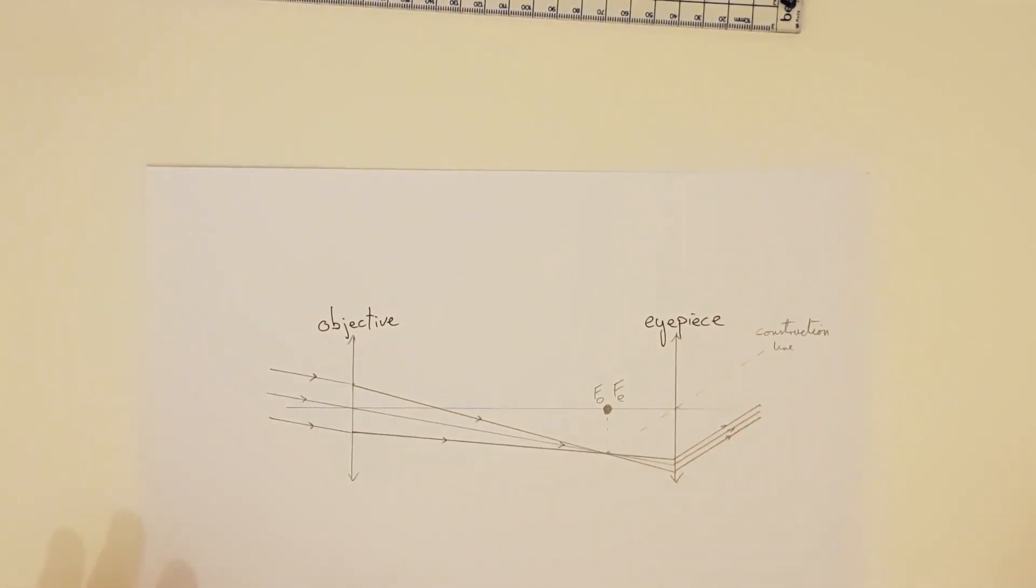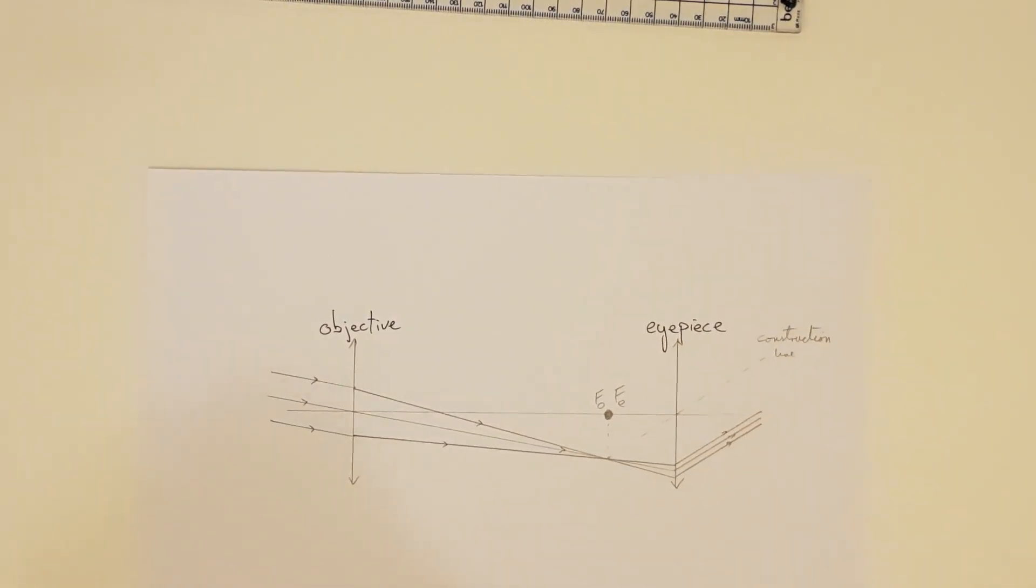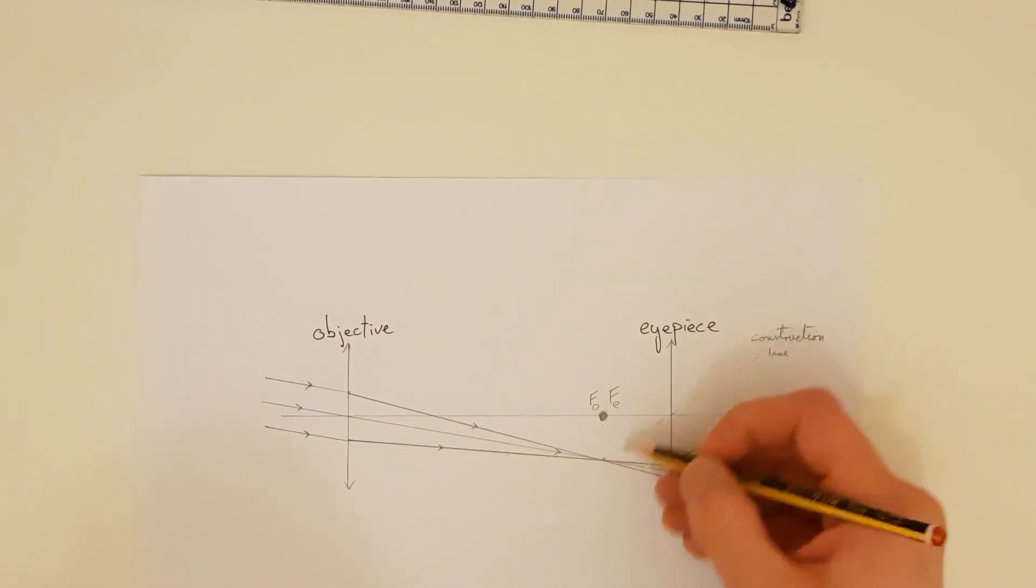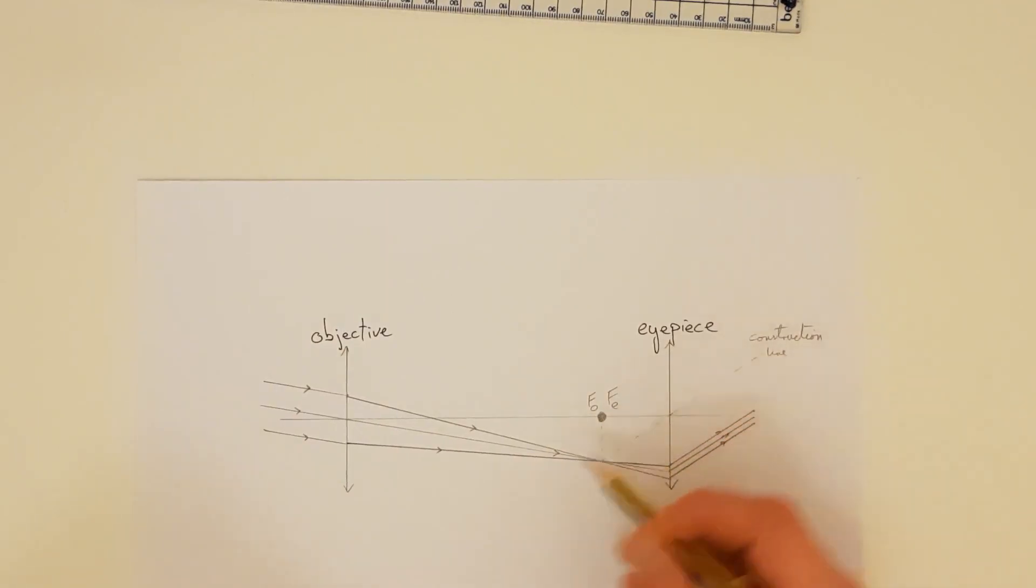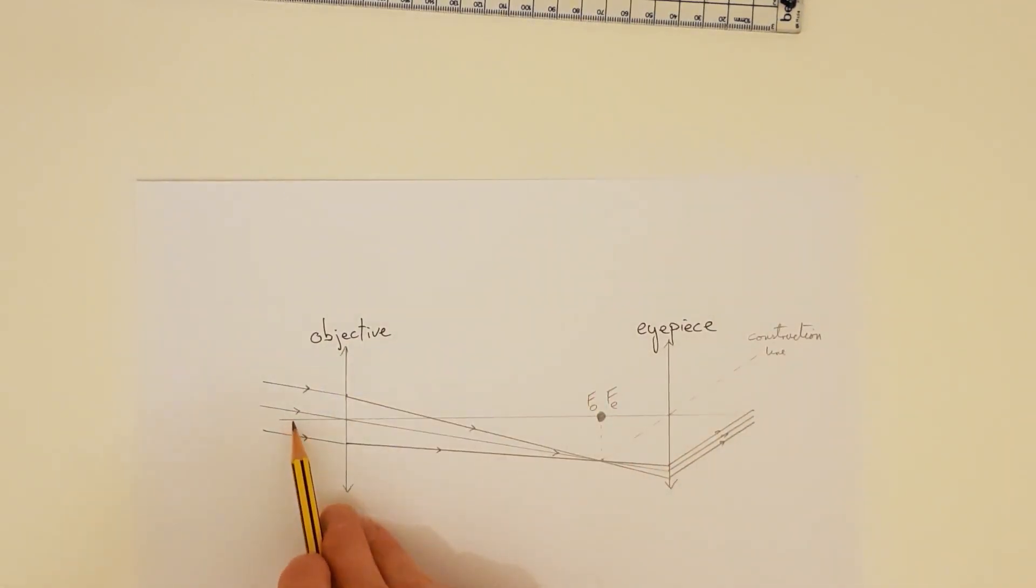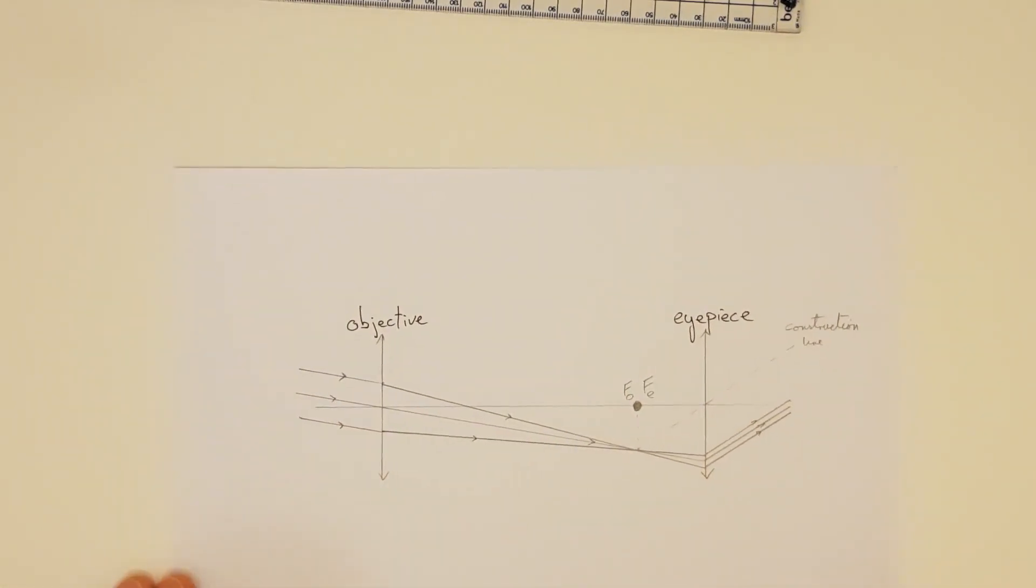And so that's my diagram complete. I'll just check it again, make sure I've got everything that needs to be on there. I can see my rays are emerging parallel. They come into a focus here at the point perpendicular to the shared foci and I've got my central ray moving undeviated through my objective lens. There I'm happy with that diagram.